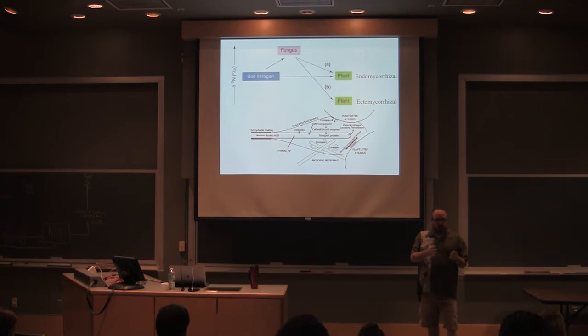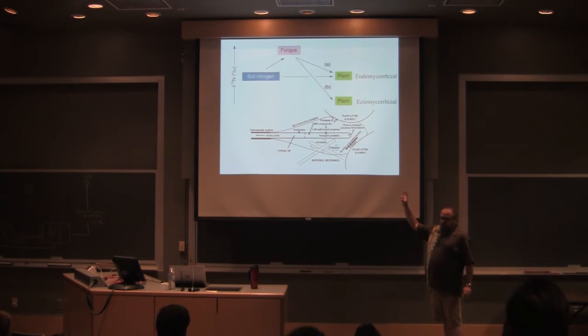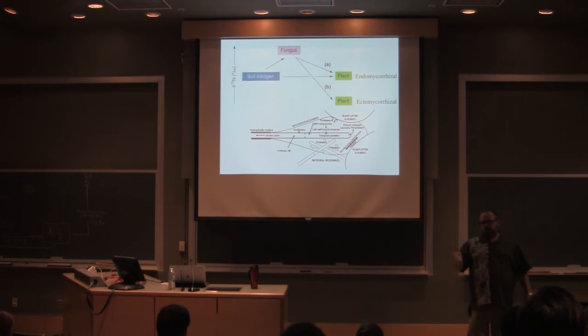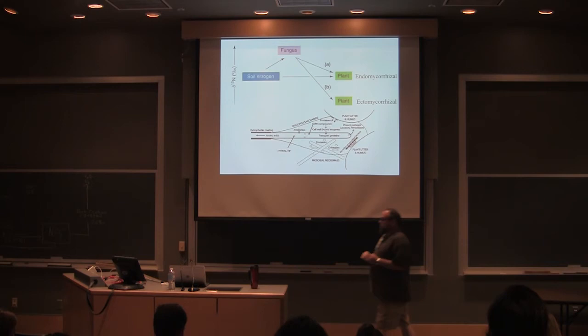This is from the original papers that tried to build a framework for what was going on within that whole system. The important thing is: when you're looking at isotope data and you think you have a mycorrhizal player in the system, endo and ectomycorrhizal are going to behave quite differently. You're going to be able to see the activity of the ectomycorrhizal pretty easily because it does this big depletion event, whereas the endomycorrhizal you're not going to be able to see as well.